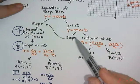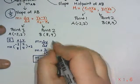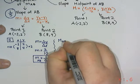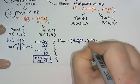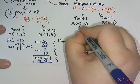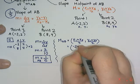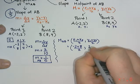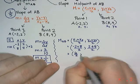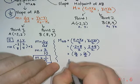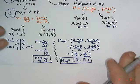On the y-intercept side, I need to find the midpoint first. The midpoint of AB is x1 plus x2 over 2, y1 plus y2 over 2. So that's negative 2 plus 8 over 2, and 2 plus 4 over 2. Negative 2 plus 8 is 6 over 2, and 2 plus 4 is 6 over 2. So 6 divided by 2 is 3, and 6 divided by 2 is 3. The midpoint of AB is the point 3 and 3, which is what we saw on the graph.